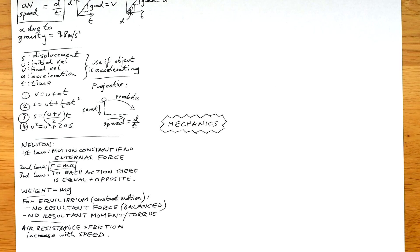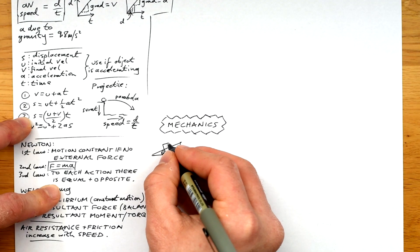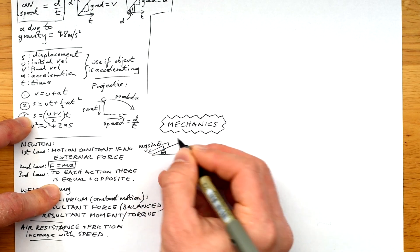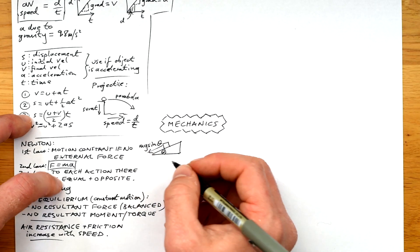Air resistance and friction, this frictional force is increased with speed. If you've got a mass on a slope, then the force pulling parallel to the slope down the slope is equal to MG sine theta. That's the component of the weight.